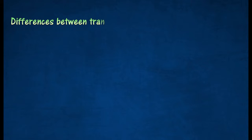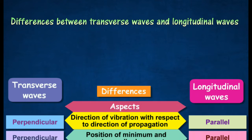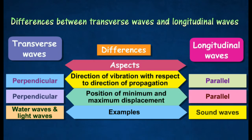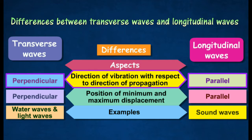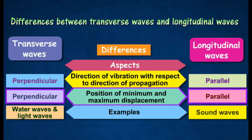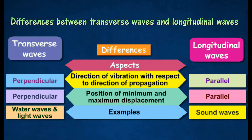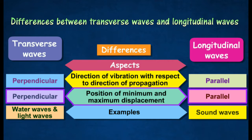Differences between transverse waves and longitudinal waves: The direction of vibration of transverse waves is perpendicular to the direction of propagation, while in longitudinal waves the direction of vibration is parallel to the direction of propagation. The position of minimum and maximum displacement in a transverse wave is perpendicular, while it is parallel in longitudinal waves.